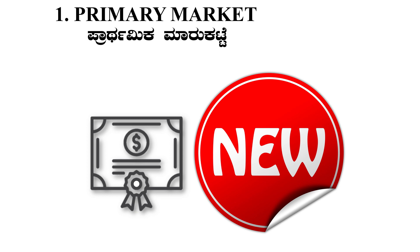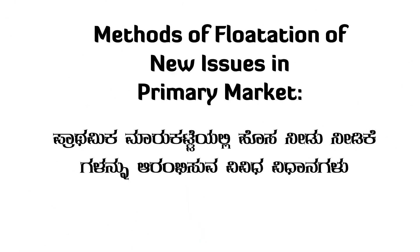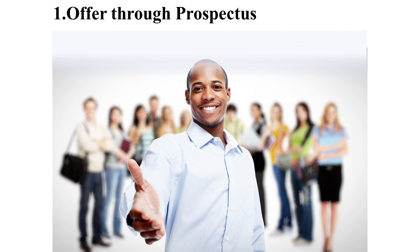Secondary market is important, but there are methods of flotation. This is an issue of stock and securities. The first method is offer through prospectus. A prospectus is a list — it is an offer or invitation to the public.